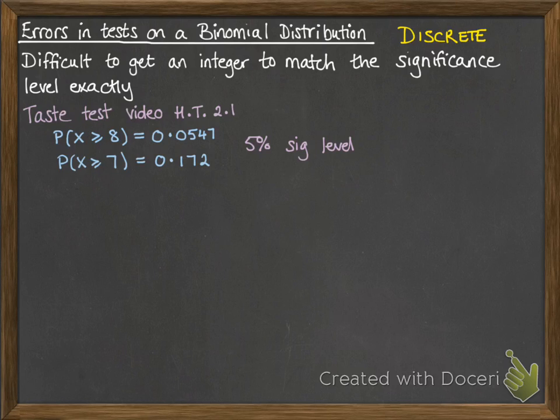If you remember back in video 2.1 on hypothesis testing, we had a situation where we were looking at a 5% significance level. When X was 8 or more, it hadn't dropped below 5% yet, but when it was 7 or more, it did. So we accepted the critical region as X ≥ 7.